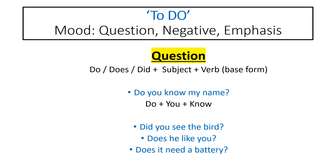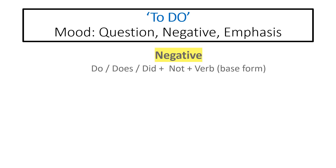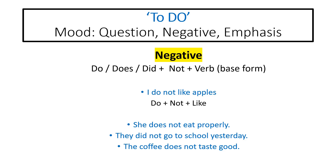Another use of 'to do' is for negative sentences. Structure: do/does/did + not + base form of verb. For example: 'I do not like apples' — 'do not like'; 'She does not eat properly' — 'does not eat'; 'They did not go to school yesterday' — 'did not go'; 'The coffee does not taste good' — 'does not taste'. In every case, do/does/did comes first, followed by 'not', then the base form of the verb: like, eat, go, taste.